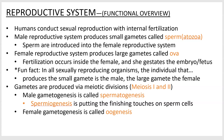We are sexually reproducing organisms, so this is just kind of an overview. We conduct internal fertilization. We introduce sperm cells into the female reproductive system where fertilization occurs, and then they develop as an embryo and then a fetus. We'll talk about that during the development section, which is later.